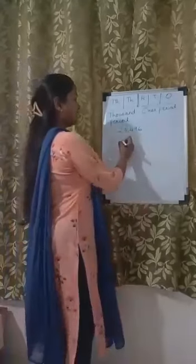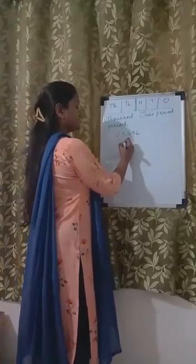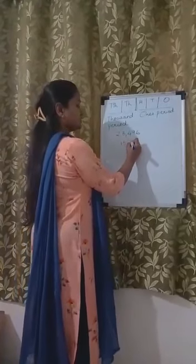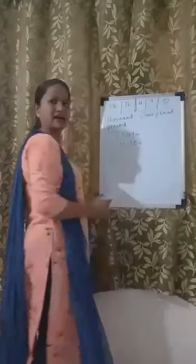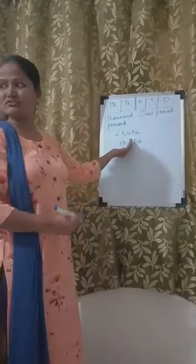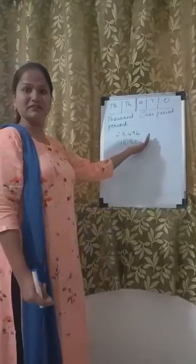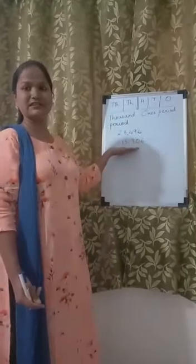So for example, if I have a number 15,306, I have a comma here which divides the number and helps me to read the number easily.